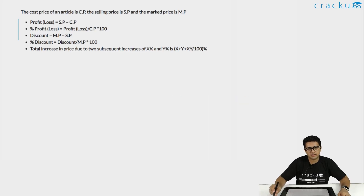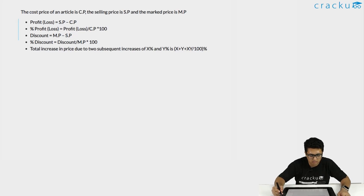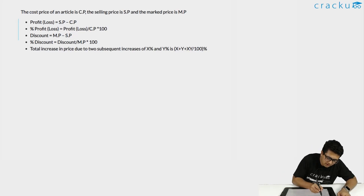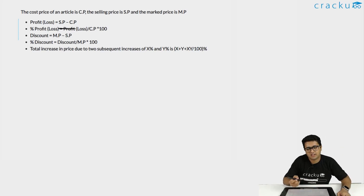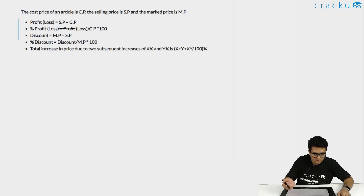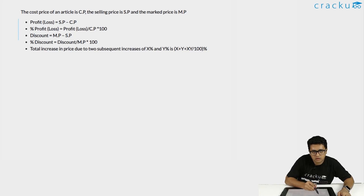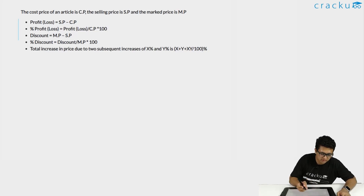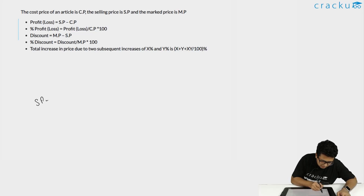The formulas are fairly simple — you would have seen them while solving for percentages. Profit is nothing but the selling price minus the cost price. Let's say a vendor has paid some cost price and sells it for some selling price; the difference between that is the profit the vendor makes. Profit percentage is nothing but profit or loss divided by the cost price.